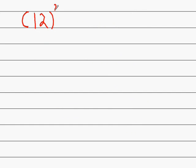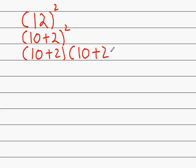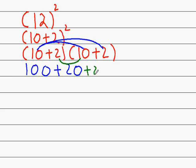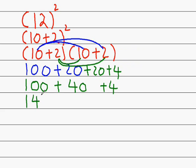If we take the number 12, it is actually the same as 10 plus 2 squared, and that is also the same as 10 plus 2 times by 10 plus 2. Expanding these brackets, if I take the 10 and multiply it by 10 gives me 100, 10 times 2 gives me 20, 2 lots of 10 is 20, and 2 times 2 is 4. If I tidy this up, that's 144.